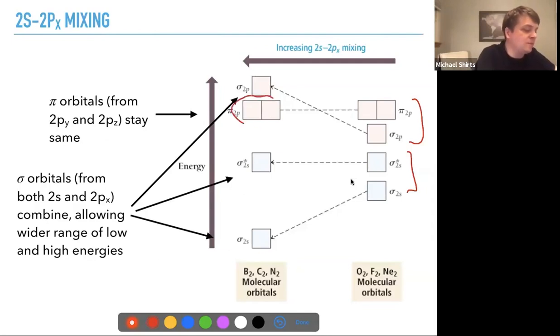And so, this is where it comes into play, that the pi 2p orbitals are lower in energy than the sigma 2p, whereas we have less mixing. O2, F2, Ne2, you get what you would generally expect, was that the sigma 2p would be lower in energy than the pi 2p.